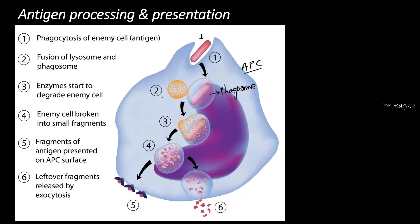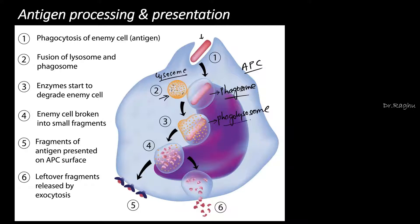There is another cell organelle present inside the antigen presenting cell called the lysosome. The lysosome contains enzymes. What happens next is that the lysosome binds with the phagosome to form one single large structure called the phagolysosome. The lysosome then releases all its enzymes into the phagolysosome.